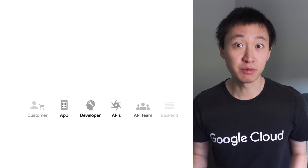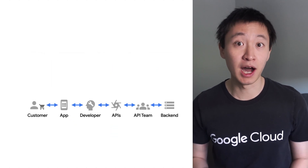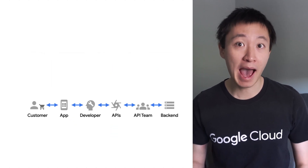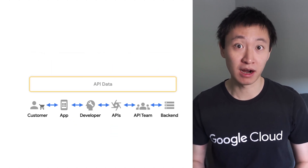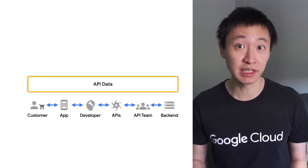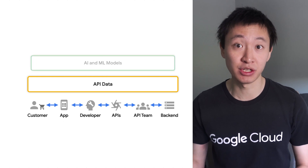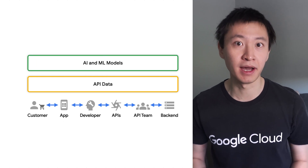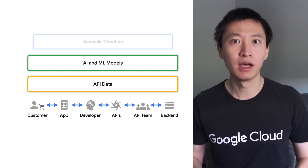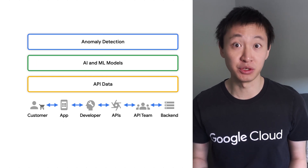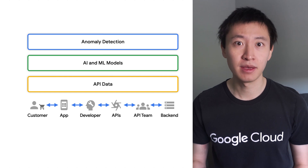To reduce manual overhead on operators, Apigee brings the power of Google's industry-leading AI and machine learning to your APIs. A great example of such a use case is anomaly detection.